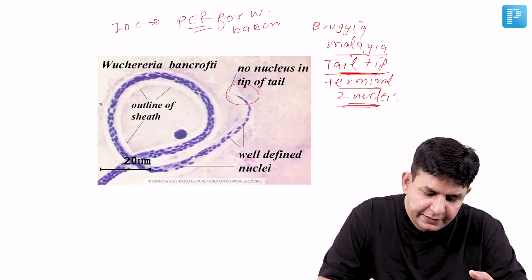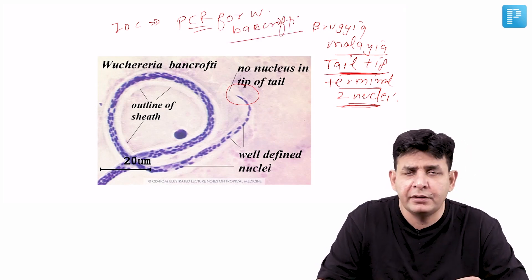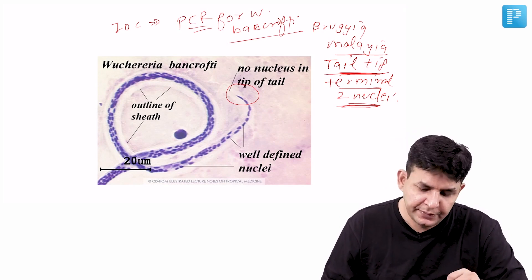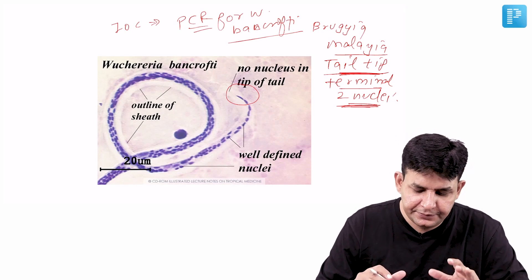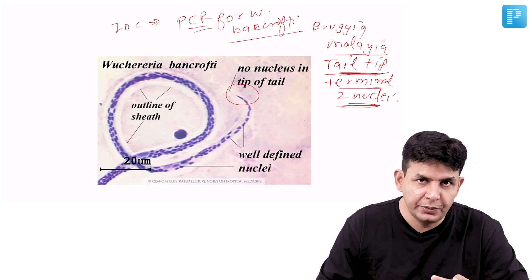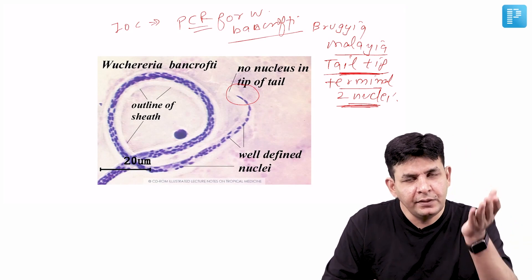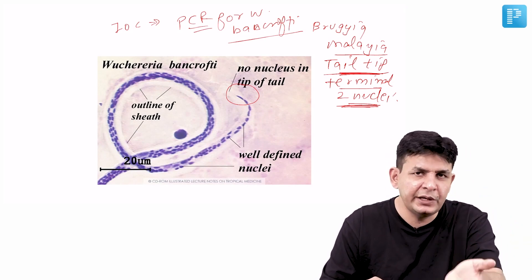For Wuchereria bancrofti you prefer PCR. Investigation choice is PCR. So these all important things regarding this particular one you need to know. The infective form is filariform larva. Which particular mosquito is most involved? The Culex.